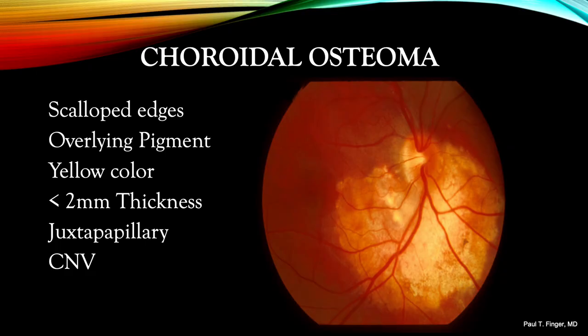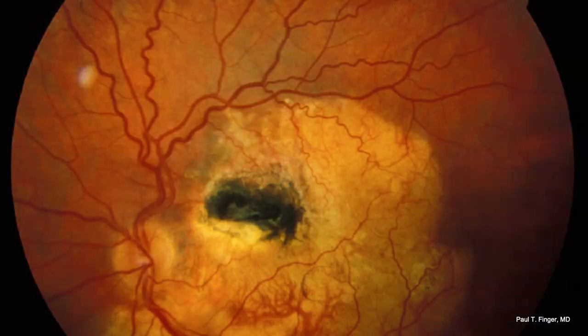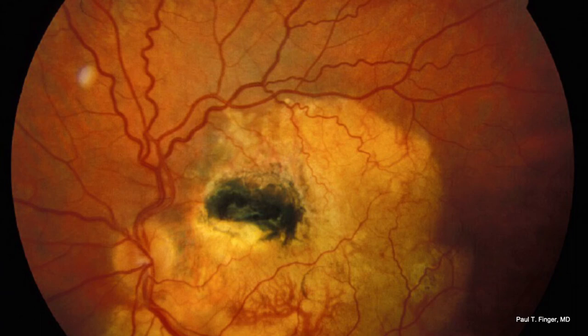Other important characteristics include well-demarcated scalloped tumor edges, clumps of overlying pigment, RPE hypertrophy, and yellow color. Juxtapapillary choroidal osteomas are rarely thicker than 2 mm and are associated with CNV. Here is another case of choroidal osteoma. List the clinical characteristics in your mind. Note the large, well-formed blood vessel at its center. Notice the scalloped edges and the overlying hypertrophy of the retinal pigment epithelium.